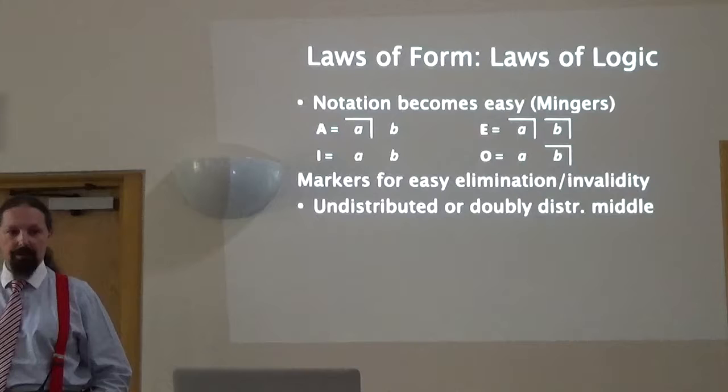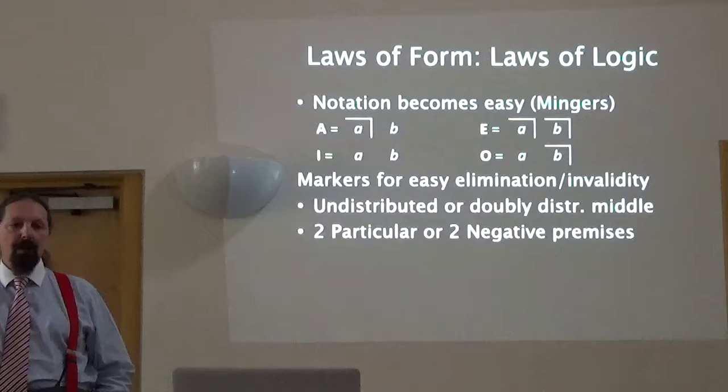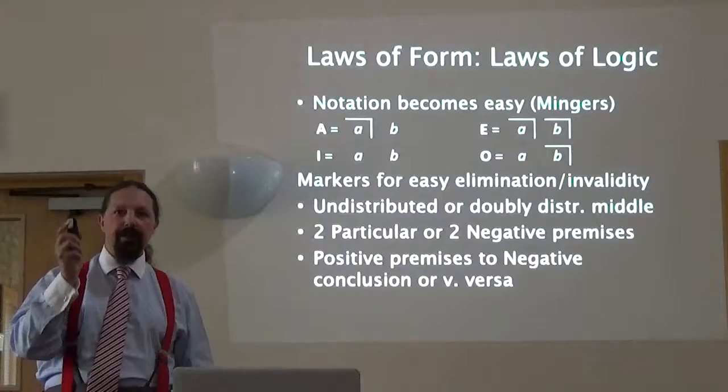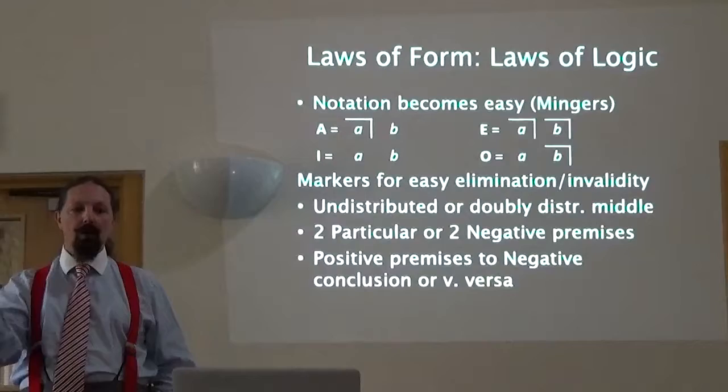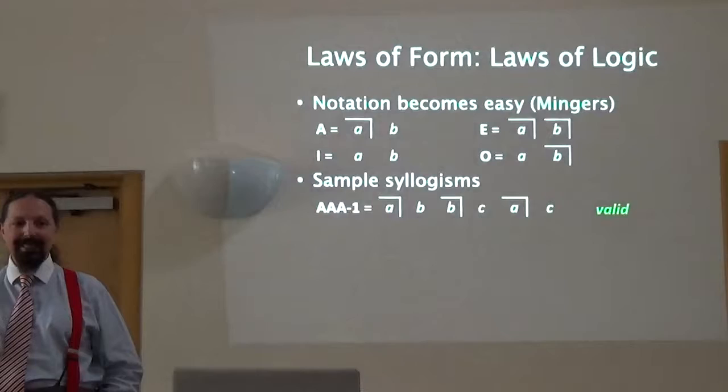It also makes it very easy to tell whether a syllogism is going to be valid or not. If two middle terms are both undistributed or both distributed, we know it's not going to be valid. If two premises are particular, or you have two negative premises, we know it's not going to be valid. If two positive premises lead to a negative conclusion, or vice versa, we know it's not going to be valid, and if two particular premises lead to a universal conclusion, that's not going to be valid either — and it's easy to see these.